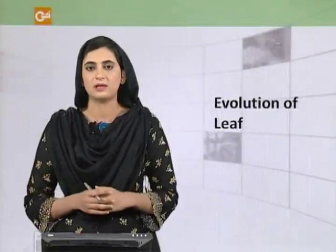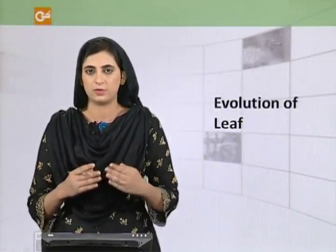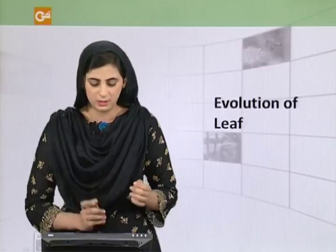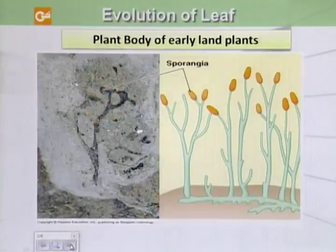We know that leaves are the solar panel of the plant — they harvest sunlight and use this light for the production of food for the plant. Now we will see how the evolution of leaf takes place.